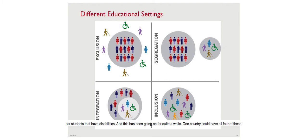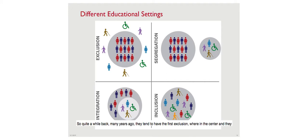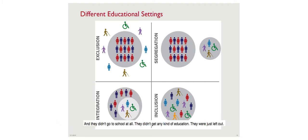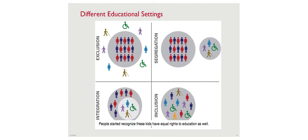One country could have all four of these environments, or maybe some of them. The first model is exclusion - regular children without disabilities went to school, but children with different disabilities were outside that circle. They didn't go to school at all - no kind of education. They stayed home with parents, worked on a farm, or were in an orphanage. They had no access.